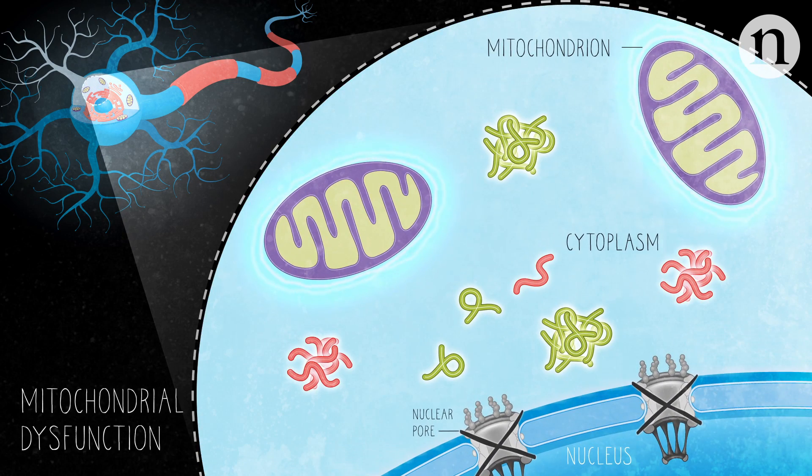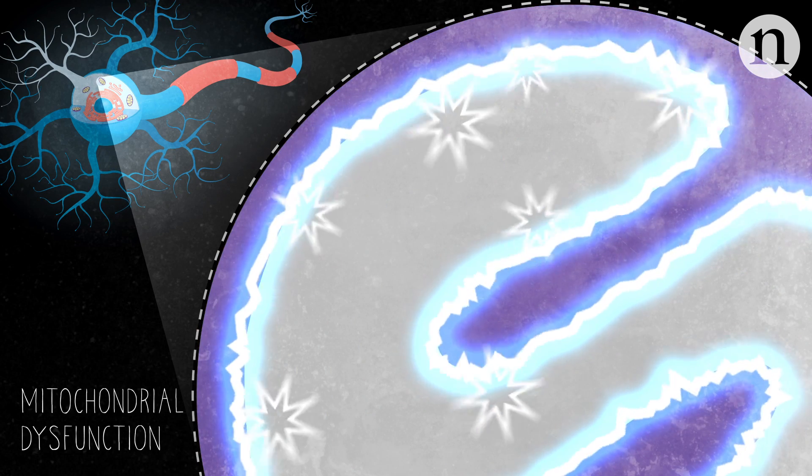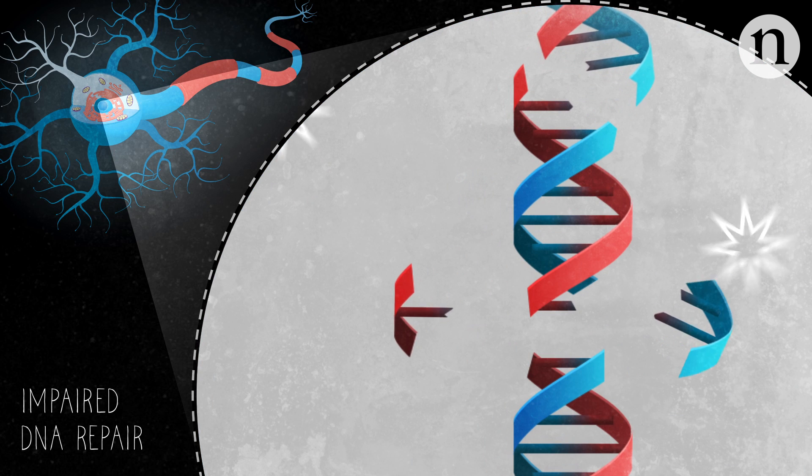For example, they can damage mitochondria, the cell's power generators. Mitochondrial damage can lead to oxidative stress, which can trigger breaks in the DNA of the cell.